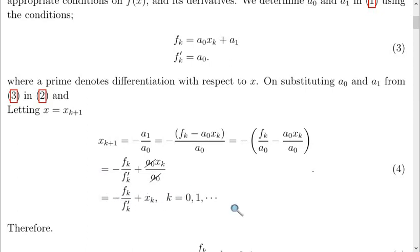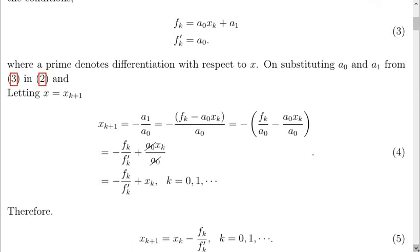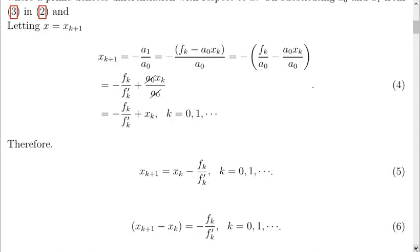You see that this s sub k plus 1 will give you this expression for k equals to 0, 1, and so forth. Therefore, we can say that s sub k plus 1 is equal to s sub k minus fk over f prime k, k equals to 0, 1, and so forth.